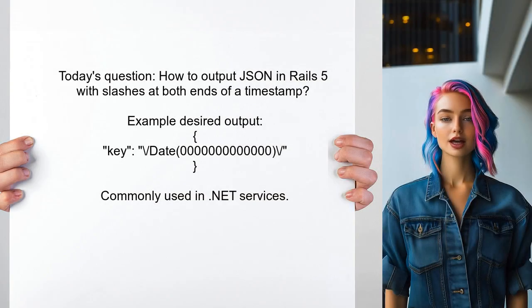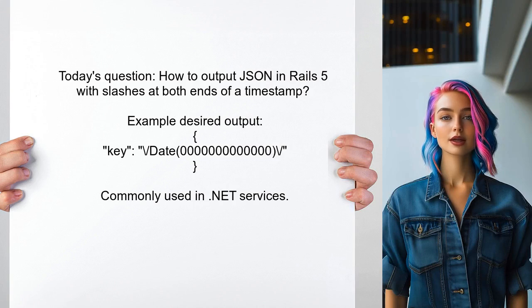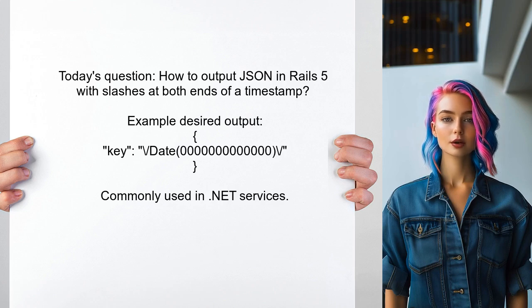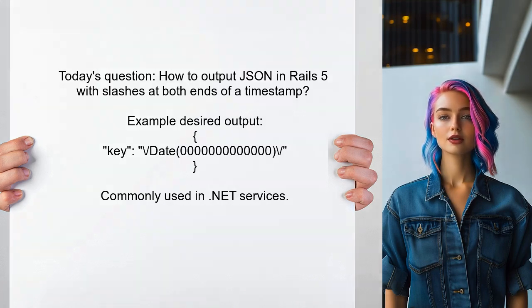Here's the specific question we're addressing today. One user asked how to output JSON in Rails 5 with a timestamp format that includes slashes at both the start and end. They provided an example of the desired output, which is commonly used in .NET services. Sound familiar? Let's dive into the details.